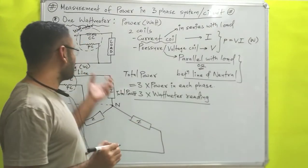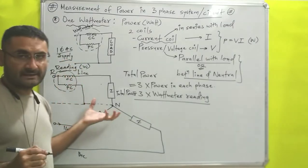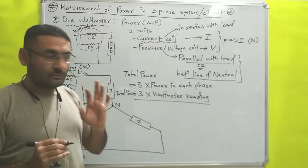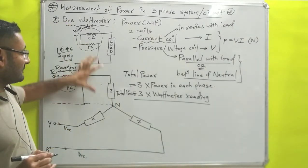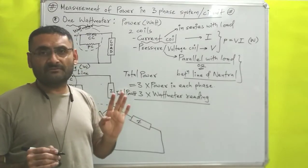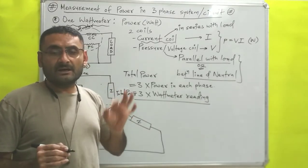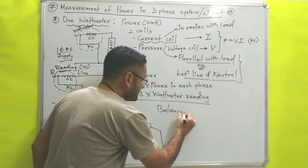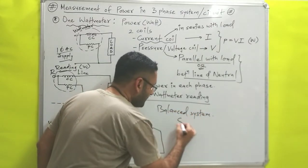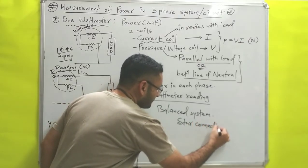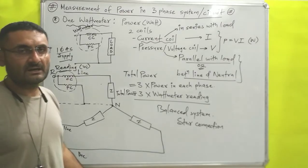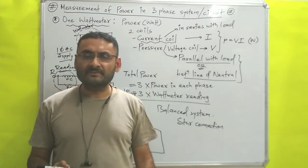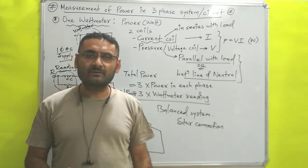One important thing: this method can only be used for star connection, not for delta connection. Star connection generally has a balanced system, whereas delta connection has an unbalanced system. So the one wattmeter method is only applicable for star connection. In the next video we will discuss other wattmeter methods. Till then, read hard, work hard. Thank you very much.